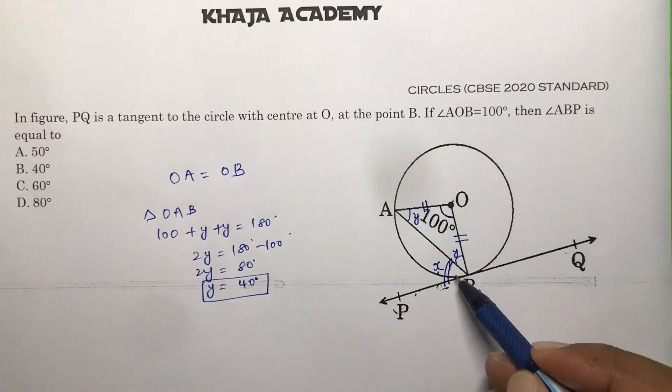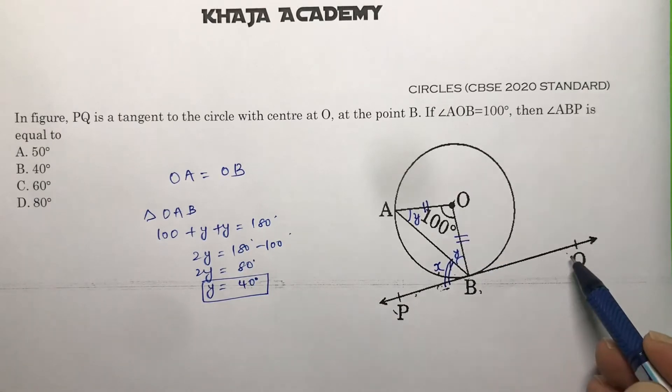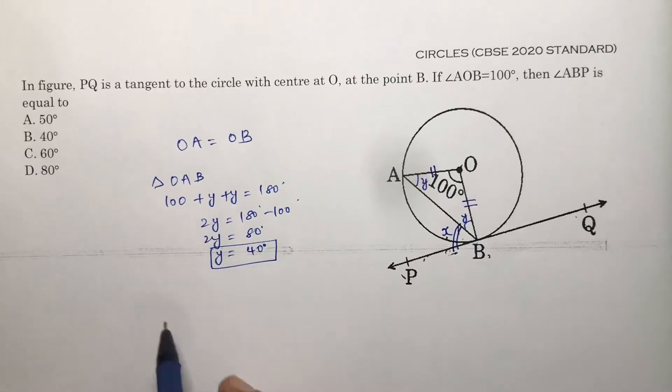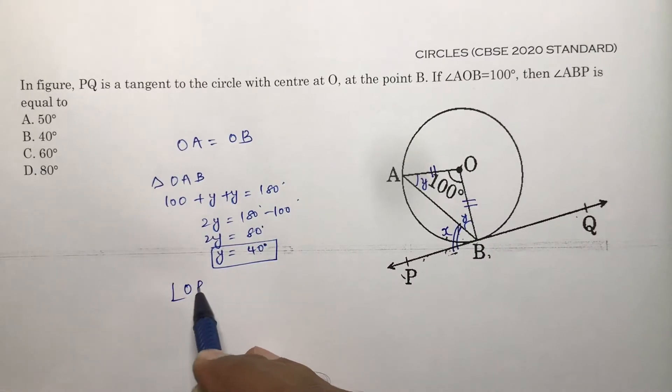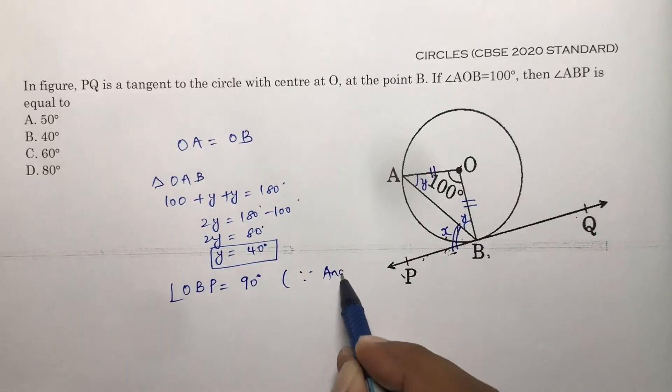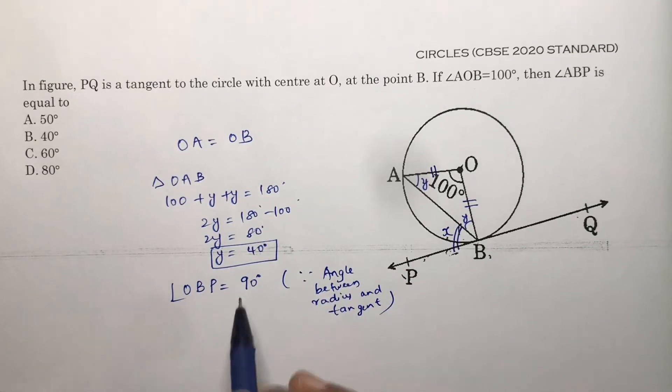Now we need to find X. We know that the angle between a radius and tangent is 90 degrees. So angle OBP is 90 degrees, because the angle between a radius and tangent is always a right angle.